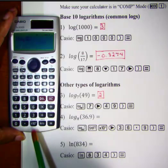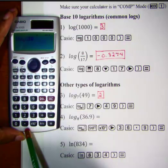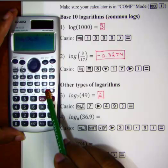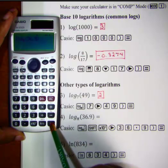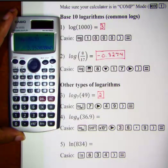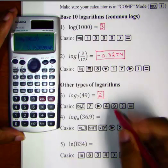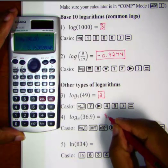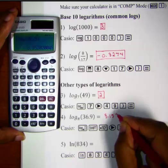Move to the argument, type in 36.9, close parenthesis, equals, and we get 3.1520.